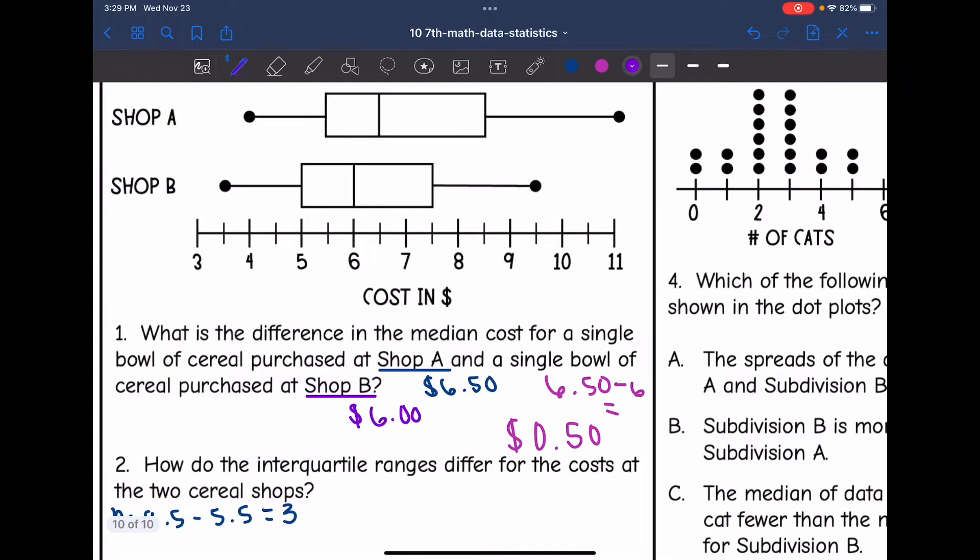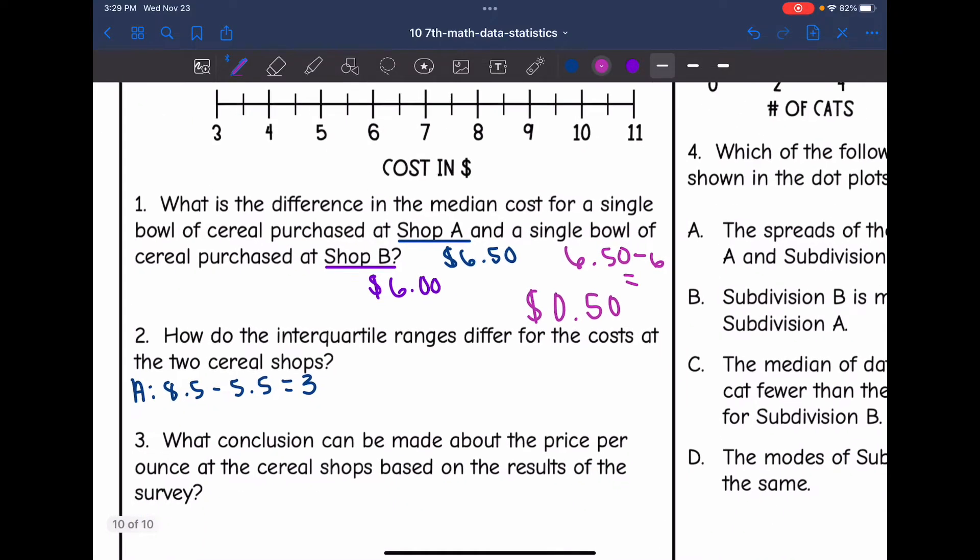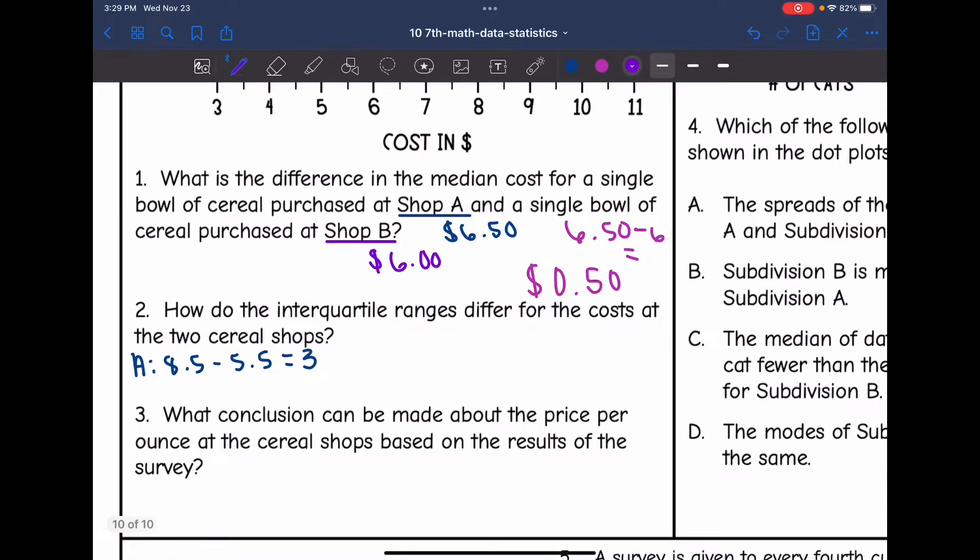Now let's find Shop B. Q3 for Shop B is 7.5 and 5 for Q1. So it'd be 7.5 minus 5 for Shop B, which is 2.5. And it says, how do the IQRs differ for them? The IQR of Shop A is 0.5 or 50 cents higher.